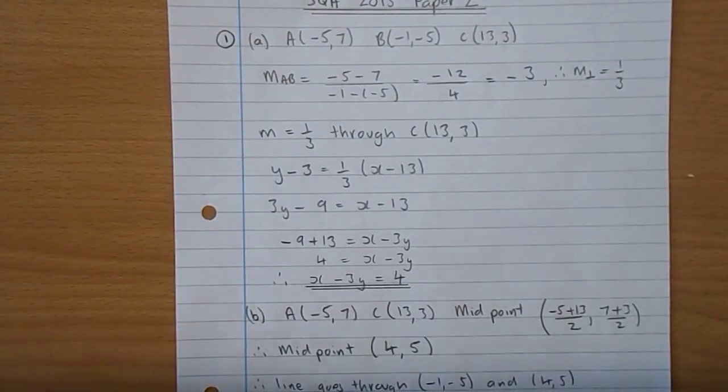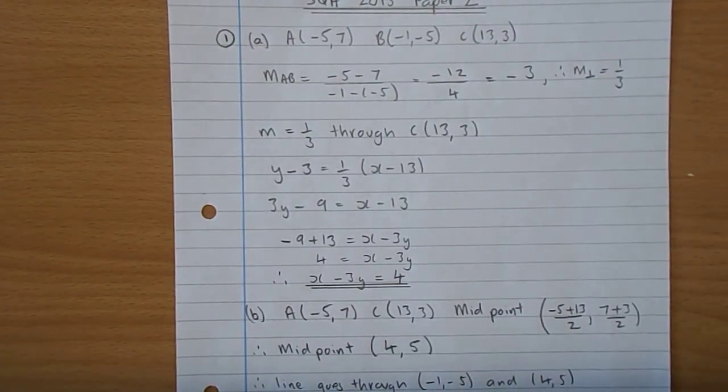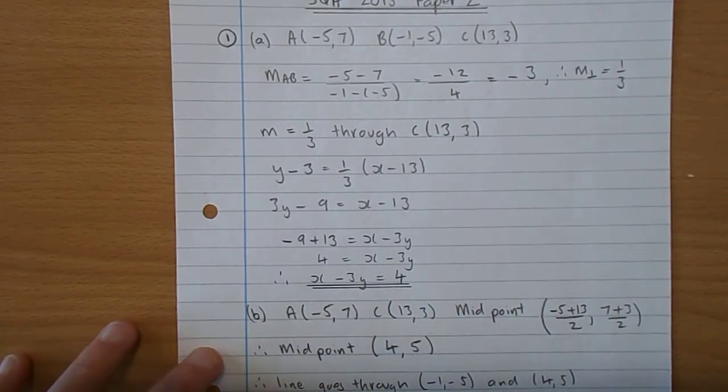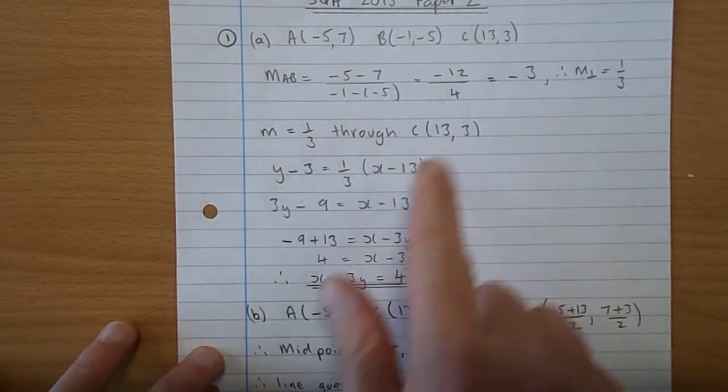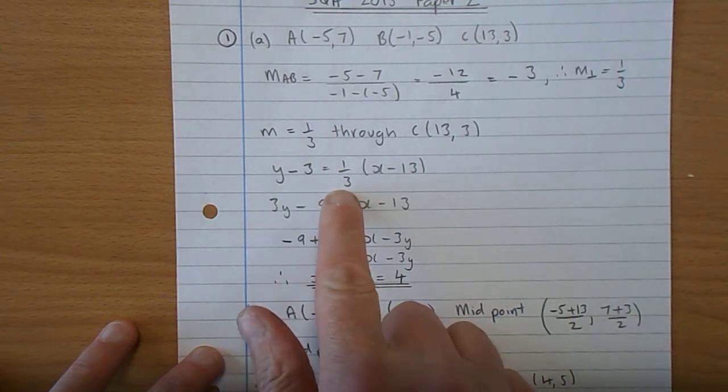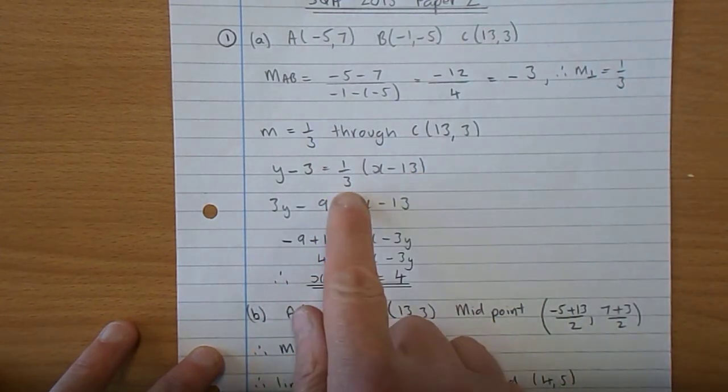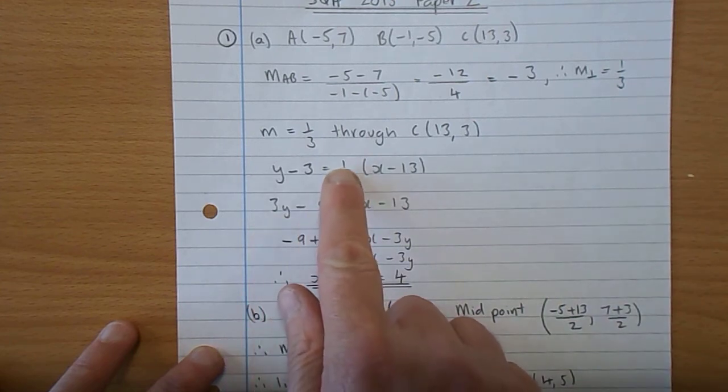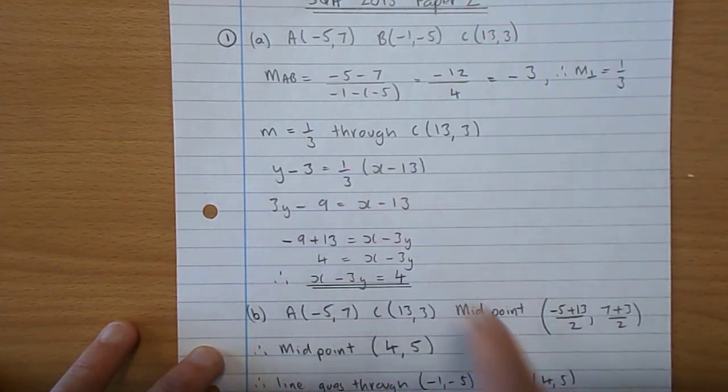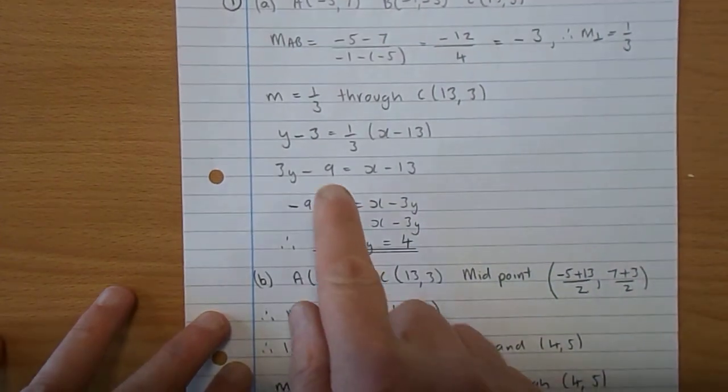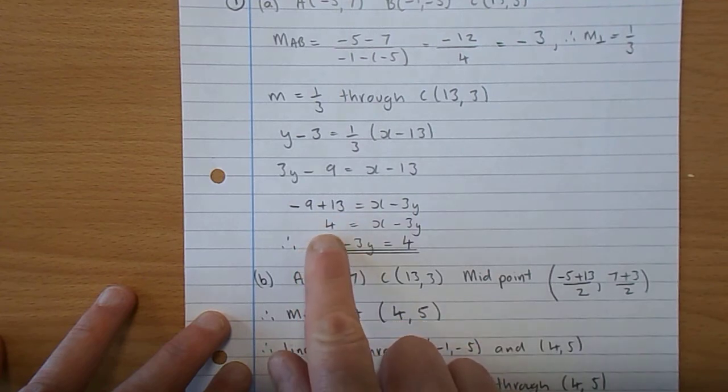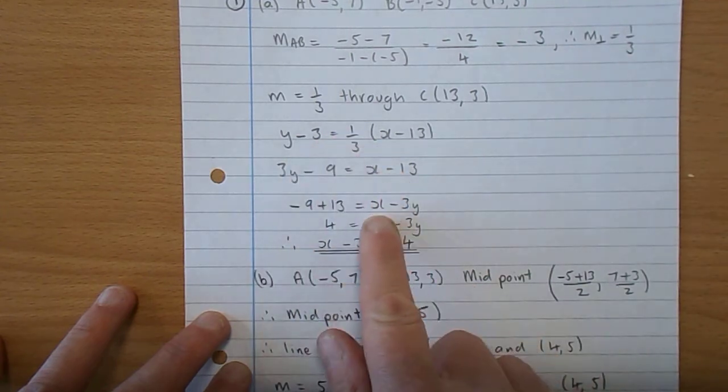So we have a line with a gradient of a third through 13, 3, that's point C. So Y minus 3 is M times X minus 13. Multiply through by 3 and you get 3Y take 9. Multiply through by 1, doesn't do anything of course, just gives you X take 13. Minus 9 add 13 gives you 4. X take 3Y.